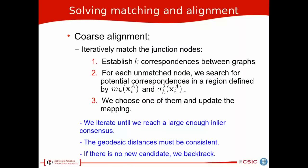To solve the alignment, we will separate the algorithm in two steps. We will first perform a coarse alignment, where we iteratively match the junction nodes by establishing k-correspondences between graphs, and then for each matching node we search for potential correspondences in a region defined by the mean and covariance, and then we choose one of them to update the mapping. We iterate until we reach a linear consensus, and we use the geodesic distance to constrain the search. If there is no new candidate, we backtrack and we begin the iterations again.